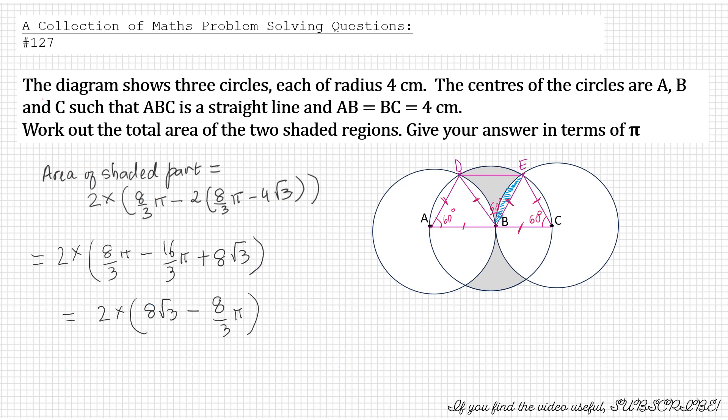And then if we simplify that, we get area of the shaded part equals twice of 8 third pi. Minus, you are multiplying this bit out, that's 16 out of 3 pi, and minus twice of 4 root 3. So that would give you 8 root 3. And that equals twice of 8 root 3 minus 8 third pi.